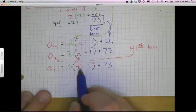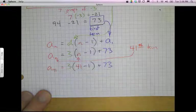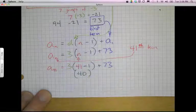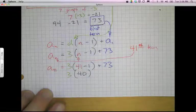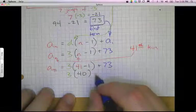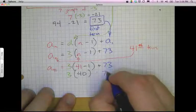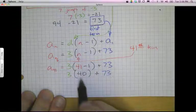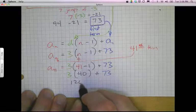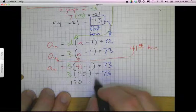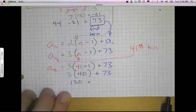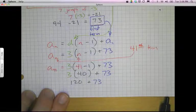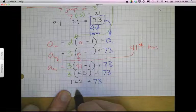So 41 minus 1 is going to end up being 40. And everything else kind of just comes on down. And then 3 times 40 is going to be 120, plus 73 still stays there. And then those two together, 120 plus 73 is 193.